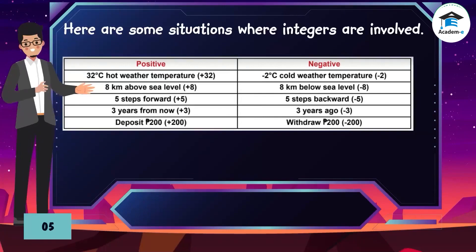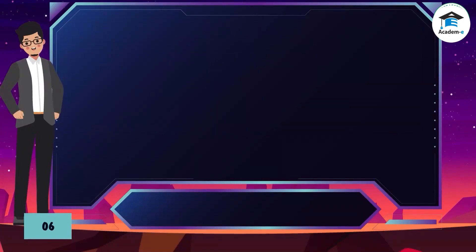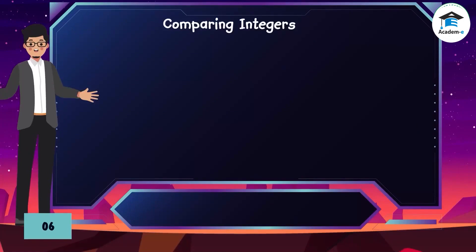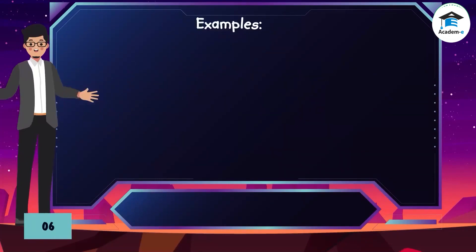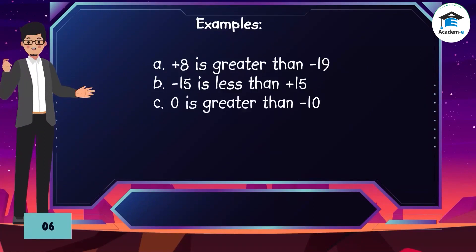Here are some situations where integers are involved. Comparing integers: positive numbers are always greater than negative numbers. Zero is less than all positive numbers but greater than any negative number. Examples: (a) positive 8 is greater than negative 19; (b) negative 15 is less than positive 15; (c) zero is greater than negative 10.